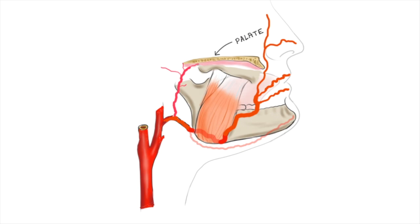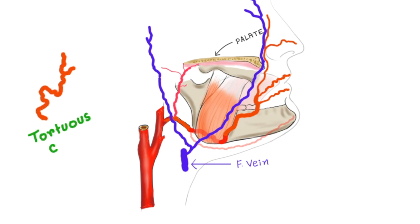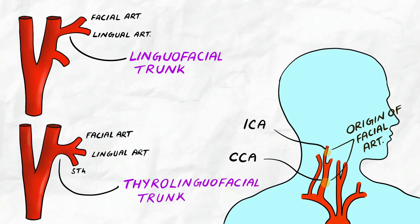Three important clinical points: first, the facial artery is accompanied by the facial vein throughout its course. Second, the facial artery is remarkably tortuous — this tortuous course prevents the artery from being stretched during movement of the mandible or facial muscles. Third, it is commonly palpated at the antero-inferior angle of the masseter muscle against the base of the mandible.